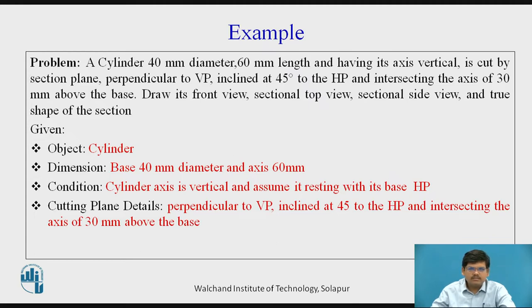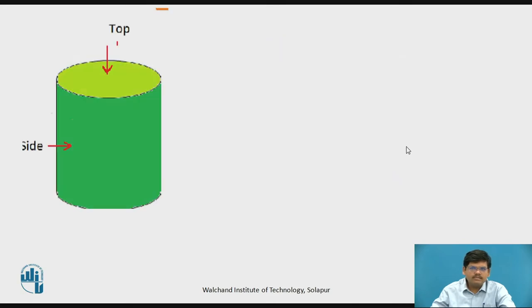Let us move further. A bit more discussion. This is the cylinder in isometric view. Here we have the top and here, similar parallel to the top, we have a base. And these are the sides or generators. Specifically, we don't have edges for cylinder, but yes, we call them as generators.